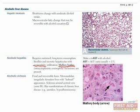The liver becomes irregular and shrunken, has micronodular regeneration, and there's a so-called hobnail appearance. Sclerosis develops around the central vein, in zone 3. Only when the liver pathology has progressed from hepatitis to cirrhosis did the patient start to develop the stigmata of liver disease, such as jaundice.